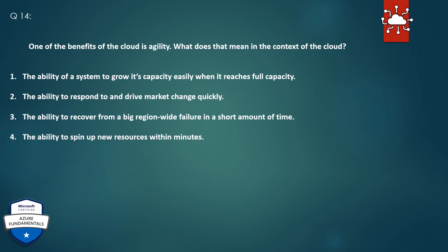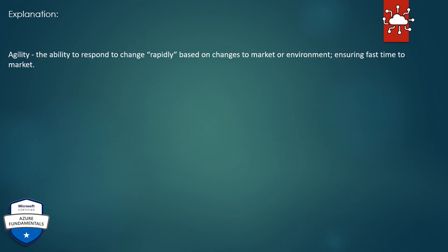Question 14. One of the benefits of the cloud is agility. What does that mean in the context of the cloud? 1. The ability of a system to grow its capacity easily when it reaches full capacity. 2. The ability to respond to and drive market change quickly. 3. The ability to recover from a big region-wide failure in a short amount of time. 4. The ability to spin up new resources within minutes. The correct answer is the ability to respond to and drive market change quickly. Explanation: The ability to respond to change rapidly based on changes to market or environment, ensuring fast time to market.